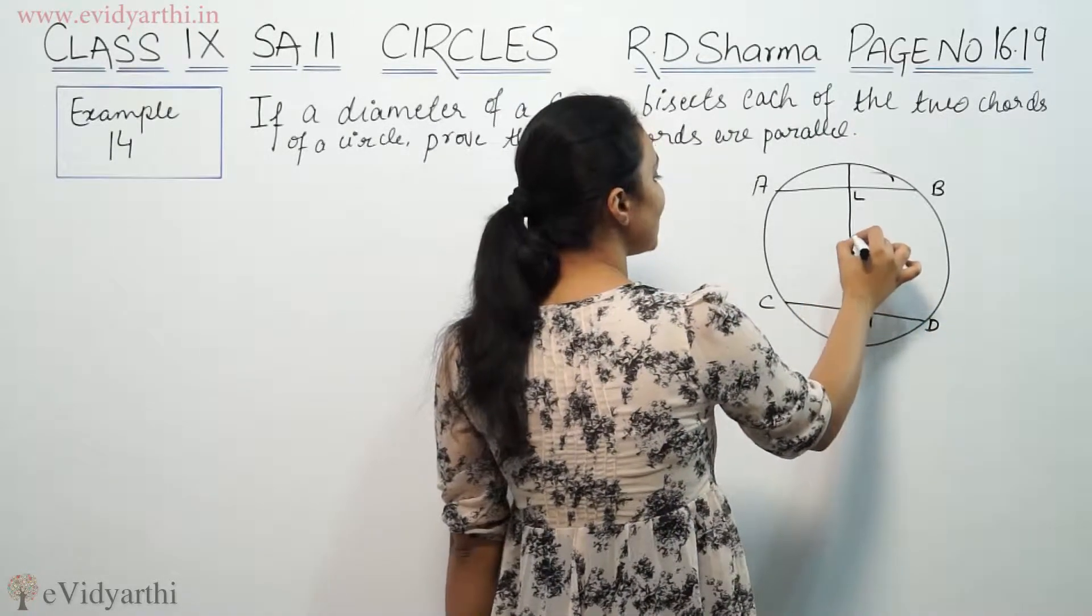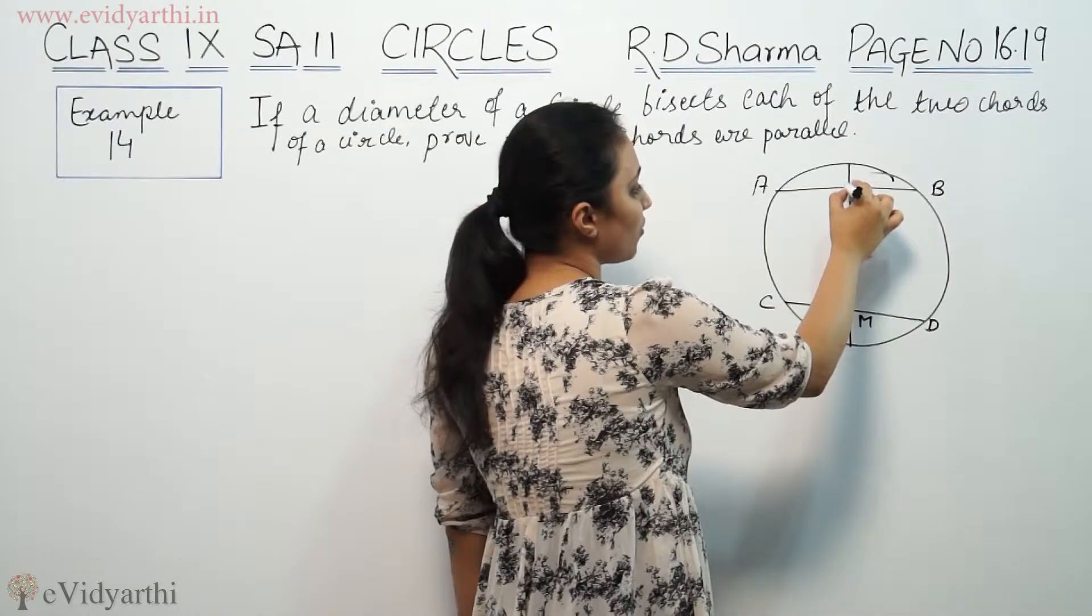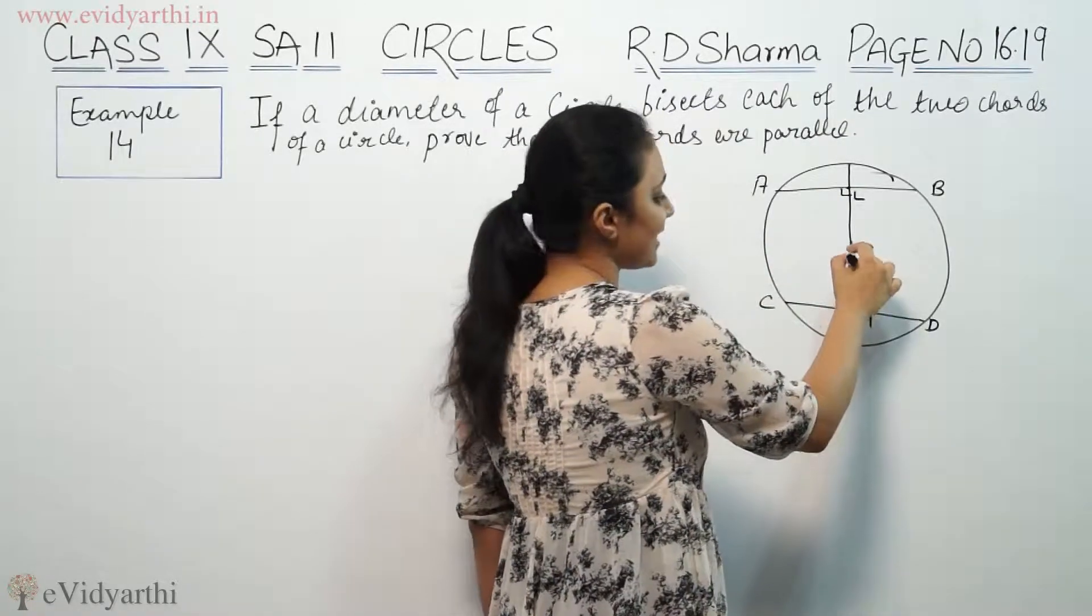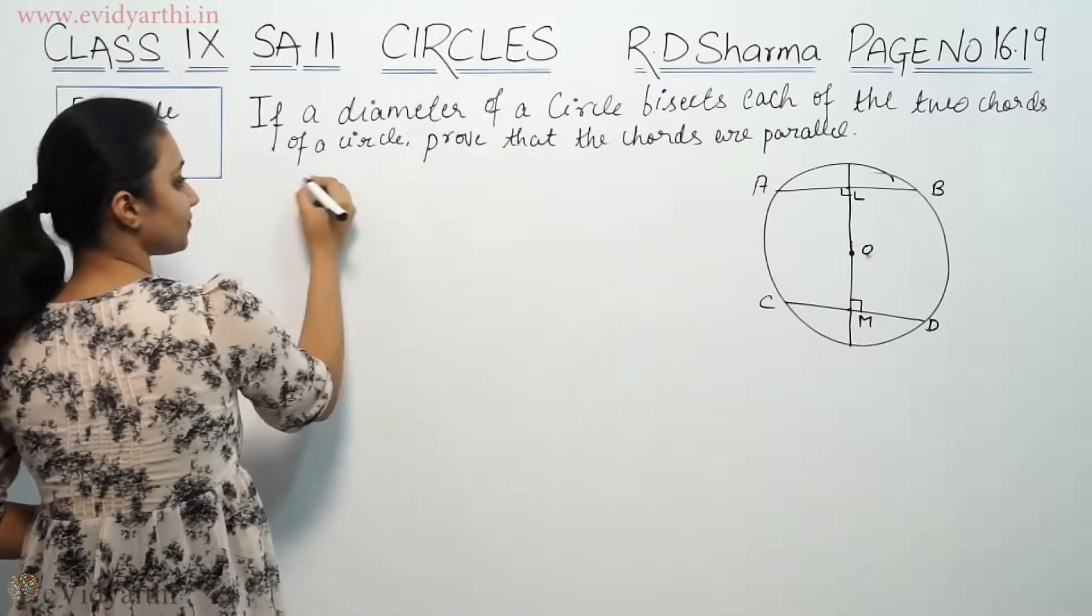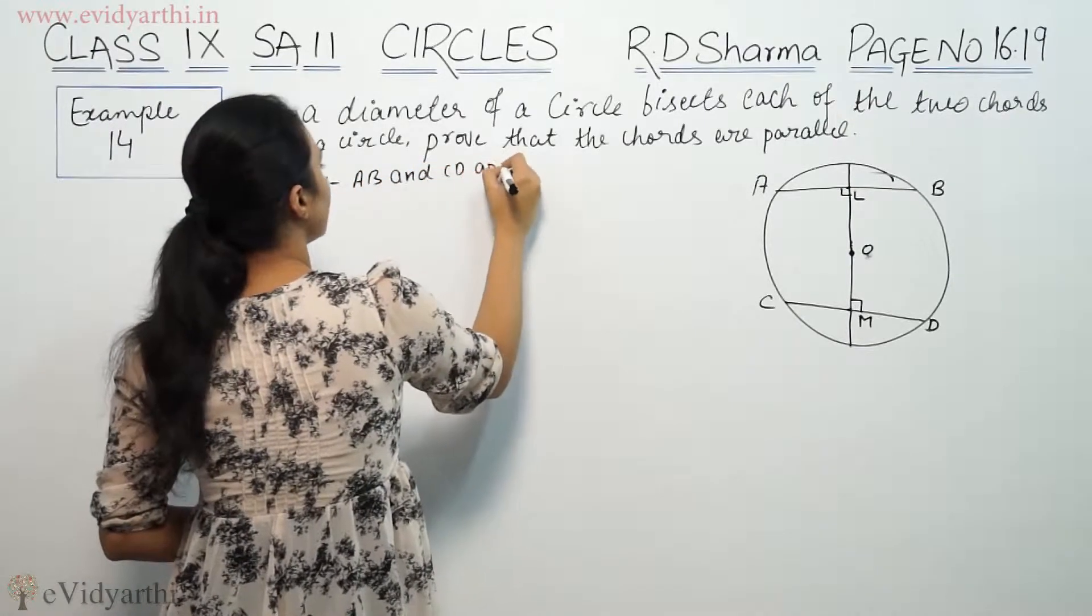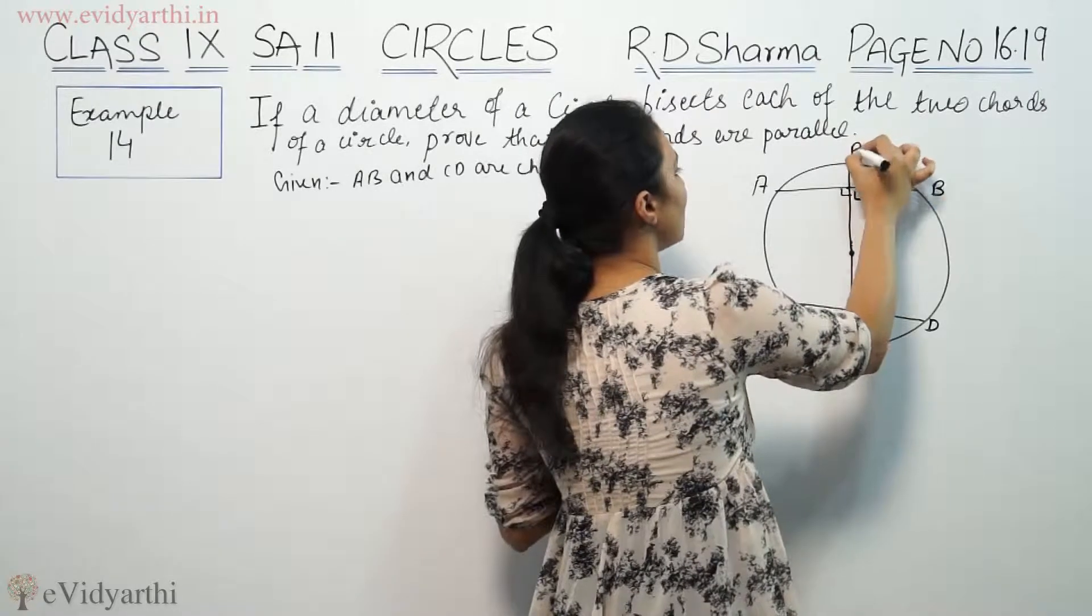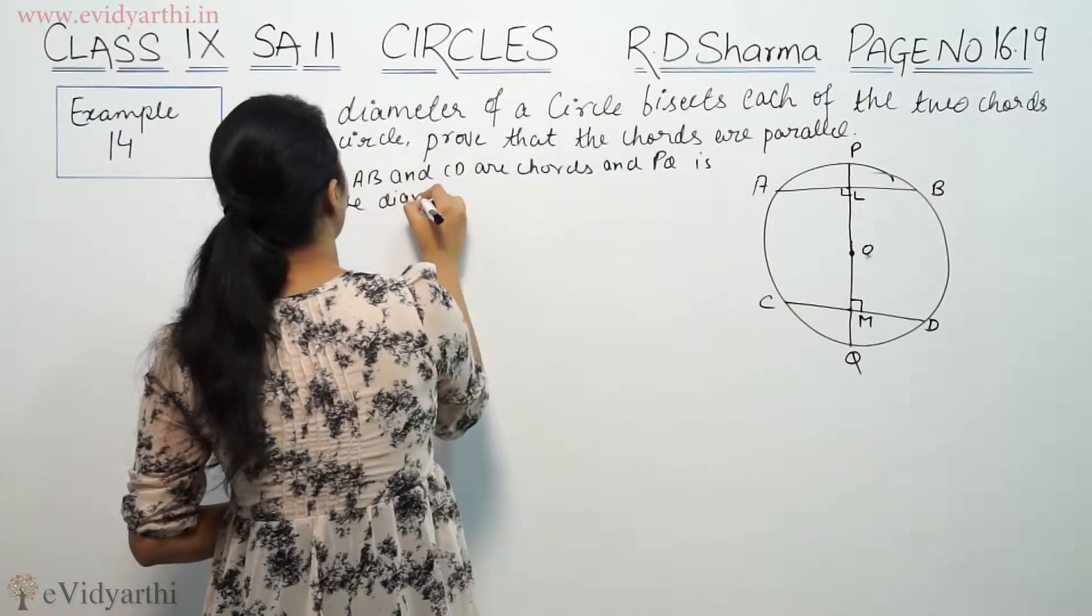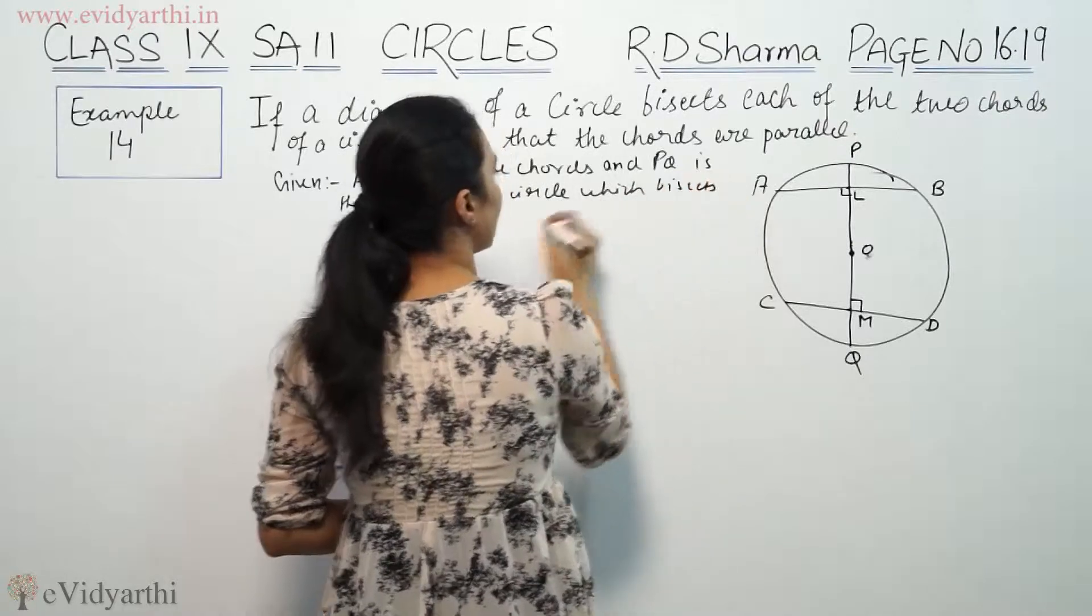So from the center of the circle, the perpendicular to the chord will bisect it according to the theorem. The chords AB and CD are given, and we have given that this is the diameter of the circle which bisects AB and CD.